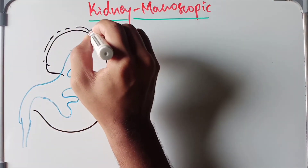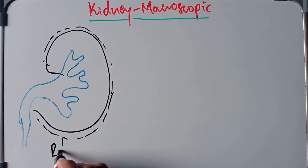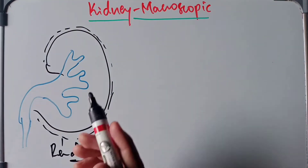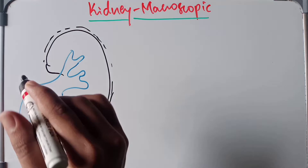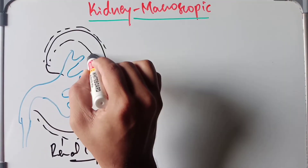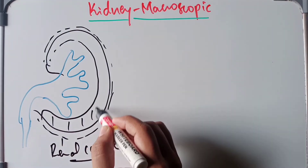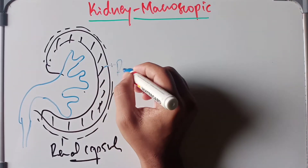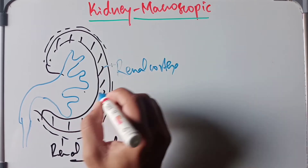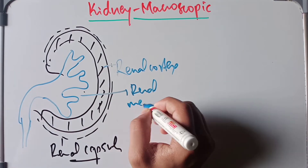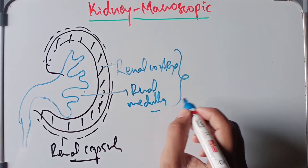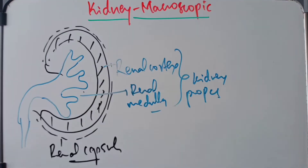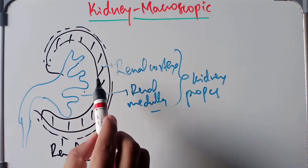On the outside we have the renal capsule — we have discussed the capsules of the kidney in another video. In the naked examination of the kidney proper, it presents with the outer cortex and the inner medulla. The renal cortex and the renal medulla together form the kidney proper, and the renal capsule covers around the kidney.